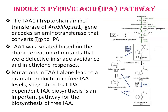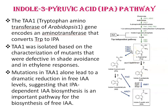Next is the indole-3-pyruvic acid (IPA) pathway. Here, the TAA1 gene — tryptophan aminotransferase of Arabidopsis 1 — encodes an aminotransferase enzyme that converts tryptophan to IPA (indole-3-pyruvic acid). The IPA pathway, represented by blue arrows in the diagram, is a key tryptophan-dependent route for auxin biosynthesis.